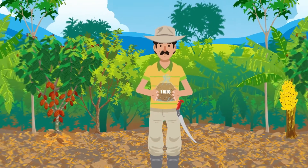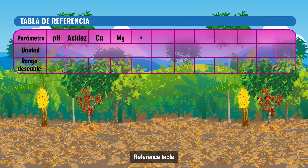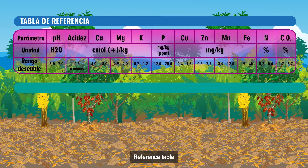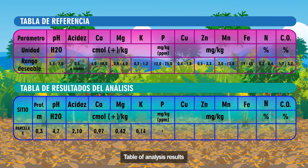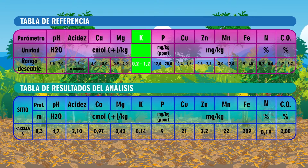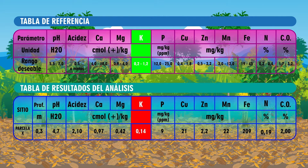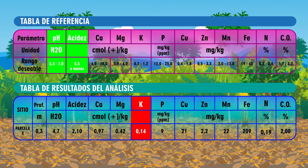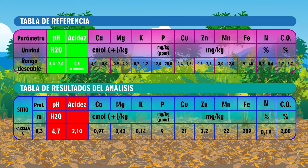With the laboratory report, we will be able to know the level of the nutrients according to the existing reference ranges. For example, if the adequate level of potassium is between 0.2 and 1.2, and the result of the analysis is less than this range, this indicates that the deficit must be supplied with fertilization. Another important aspect to check is acidity, since the absorption of nutrients by the roots can be affected. The more acidic the soil, the less nutrient availability there will be. For example, a pH below 5.5 indicates that there are acidity problems.